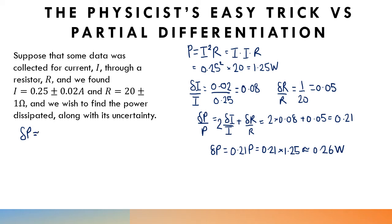It's equal to the partial derivative with respect to each of the quantities in it. So partial dP by dI times the uncertainty in I, plus partial dP by dR times the uncertainty in R.